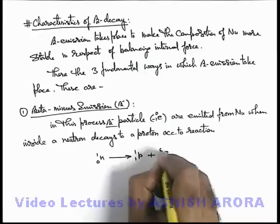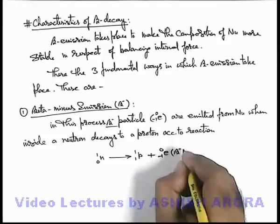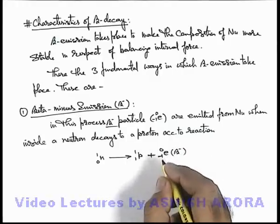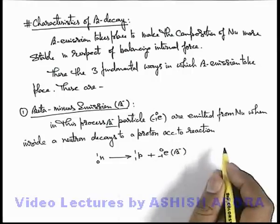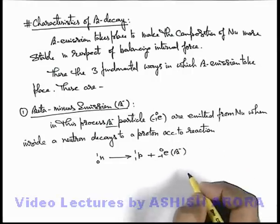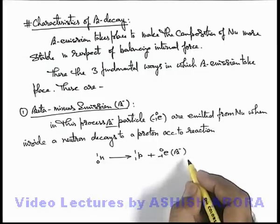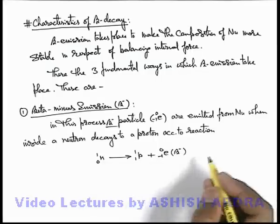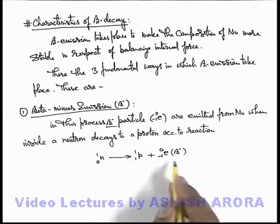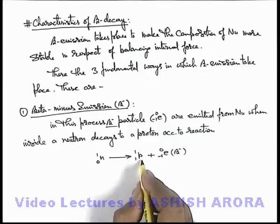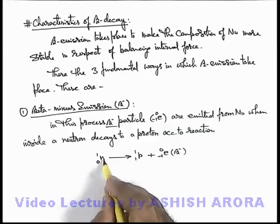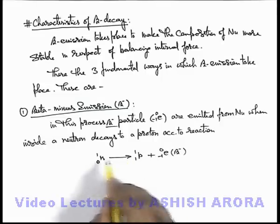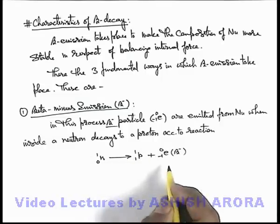A beta minus particle, which is an electron, is emitted to conserve mass as well as charge, and some energy is released which is taken away by this beta particle. We can understand how the beta minus particle or an electron is emitted from the nucleus — when a neutron transforms into a proton, the composition becomes more stable because earlier the nuclear forces were too high making it unstable.